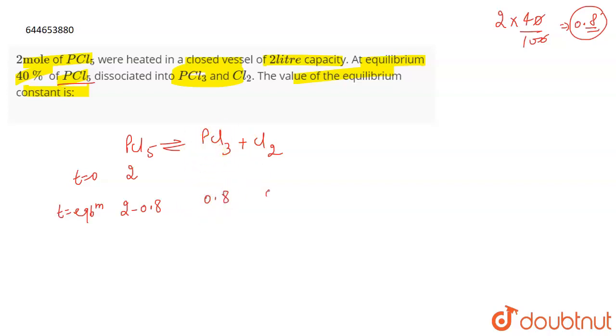How many moles of PCl3 will be formed? 0.8. And moles of Cl2 formed will be 0.8, because the stoichiometry is equal. So if 40 percent of PCl5 got dissociated, how much amount of PCl5 is left?